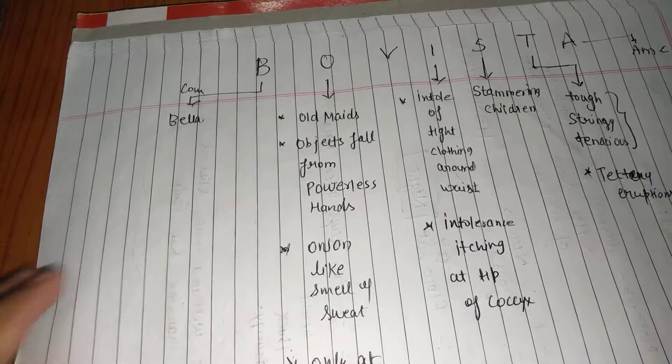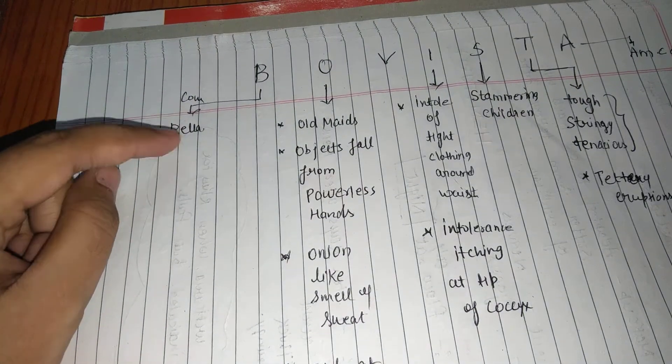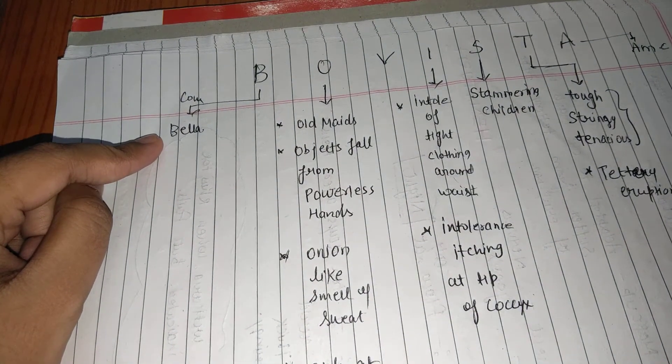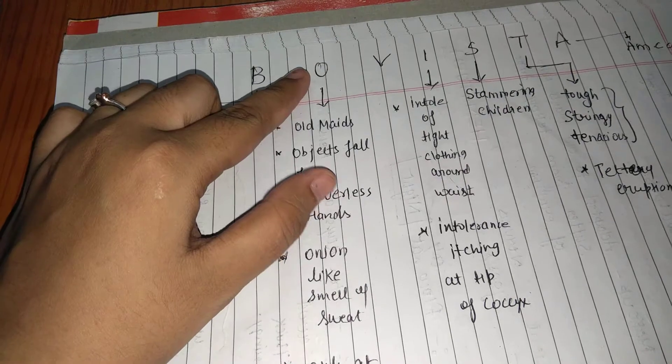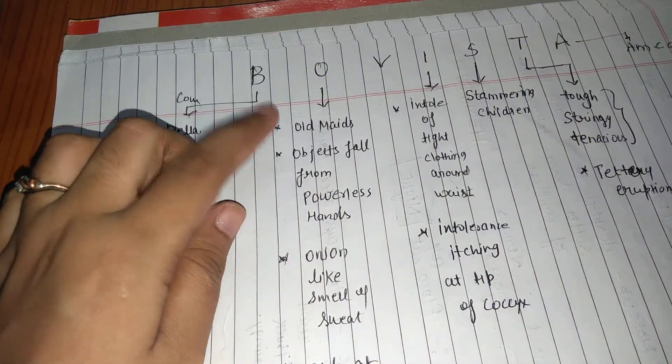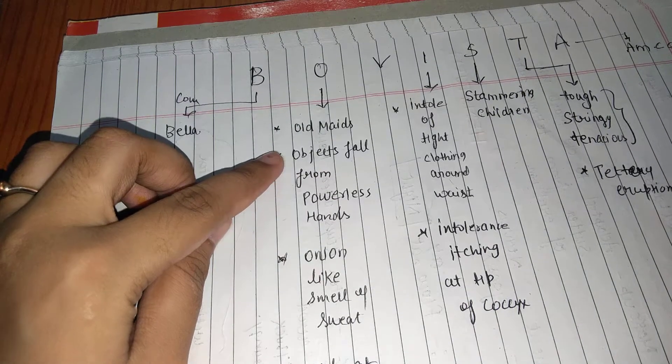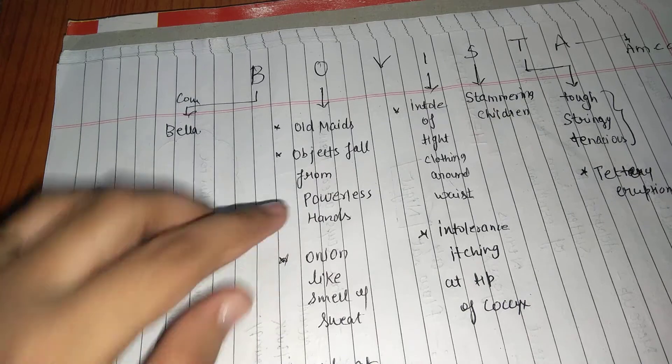So let's start with the first word of Bovista. You can remember this comparison with Belladonna in the menstrual troubles. From O you can remember 1, 2, 3, 4, 5 symptoms. That is: old maids, objects fall from powerless hands, clumsiness, destructive.